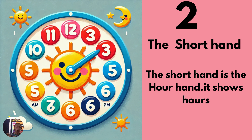Another part of a clock is the short hand. The short hand is the hour hand. It shows hours — how long you do certain things. It shows the hours of time.